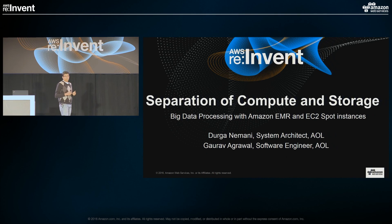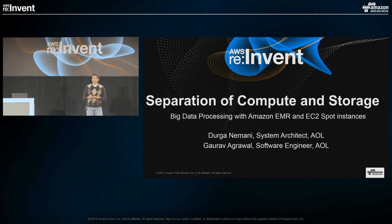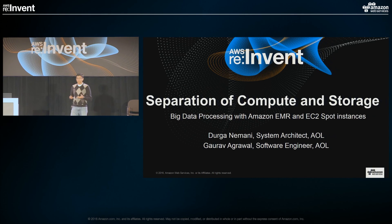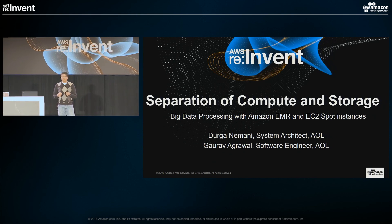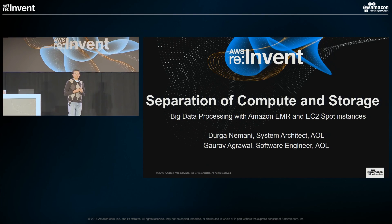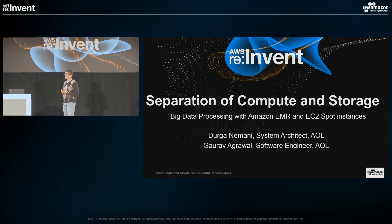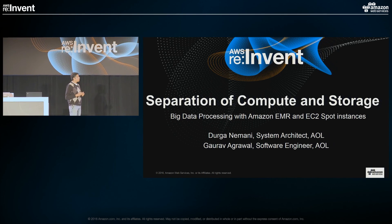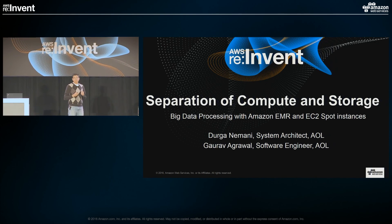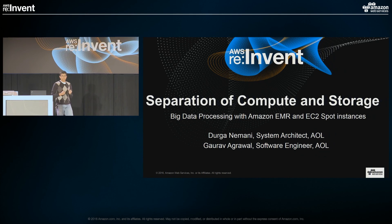We decided to store the data on S3 and use transient EMR clusters to process the data. Rather than having one cluster and running multiple jobs on it, we decided to create a separate cluster for each job. This allowed us to scale massively across multiple AWS regions, tapping into the spot markets in all those regions.